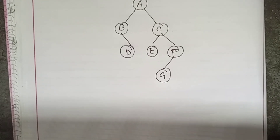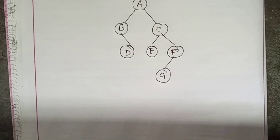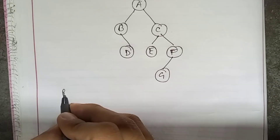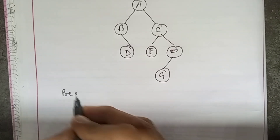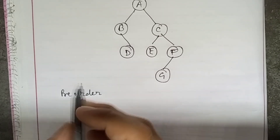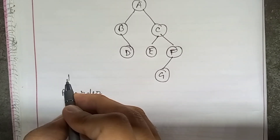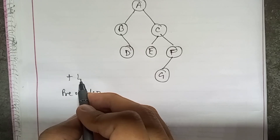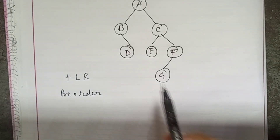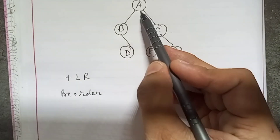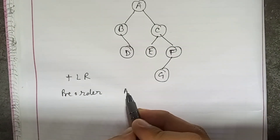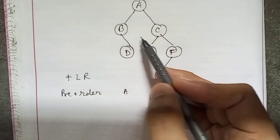Traversal means visiting each node once in a particular order. We will begin with pre-order. As I mentioned, pre-order means first we go to root, then left, then right. Let's begin — root is A.